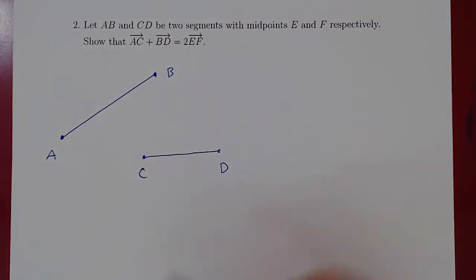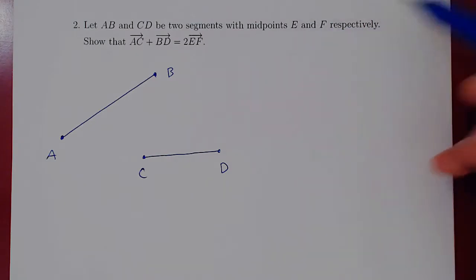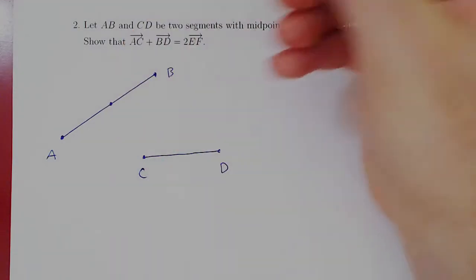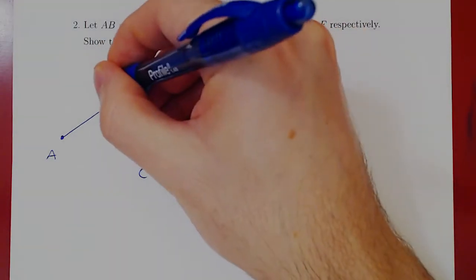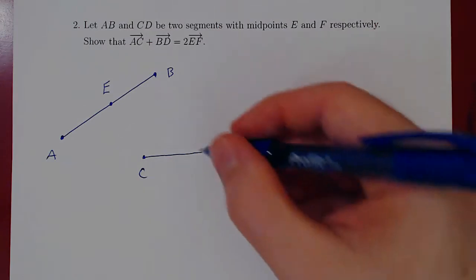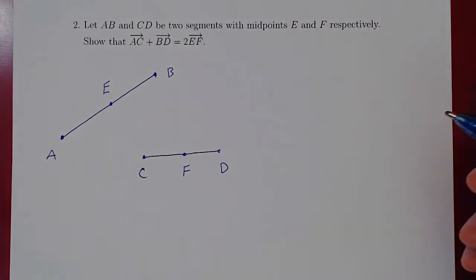What else do we know? AB and CD are two segments with midpoints E and F respectively. Therefore, E is the midpoint of AB, so it cuts the segment into two equal parts. And the same goes to F and CD. F is the midpoint of CD, so it cuts the segment into two equal parts.